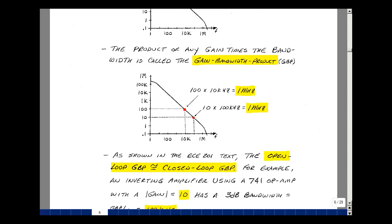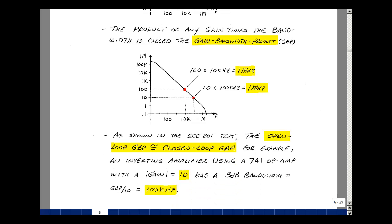In the 201 textbook, they showed that the open-loop gain-bandwidth product of an op-amp is roughly the same as the closed-loop gain-bandwidth product of the amplifier that you make. So if we're making an inverting amplifier, and the low-frequency gain is 10 in magnitude, in other words, a gain of minus 10, we'd see that the 3 dB bandwidth is about 100 kilohertz. So again, the product of these two would then be 1 million if that was a 741 op-amp.